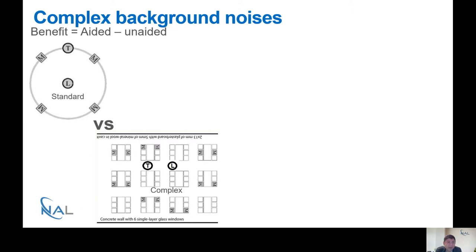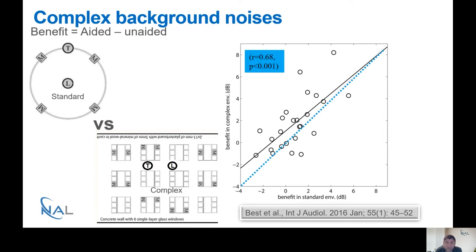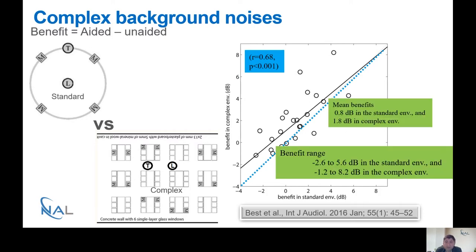Let's now consider the benefit measured as the difference between the aided minus the unaided condition for the hearing impaired group. Here are the results. The x-axis shows the results for the standard and the y-axis for the complex condition. Again, most of the results lie above the dotted line. What that really means is that people on average perceive greater benefits in the complex environment than they did in the standard environment by about 1 dB in this experiment. It's also worth noting that the benefit range in the standard environment was smaller than the one observed in the complex environment.